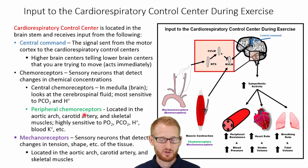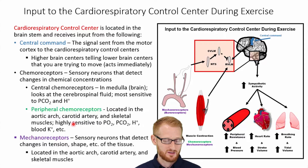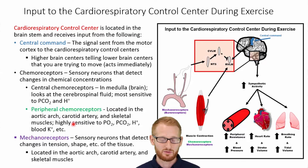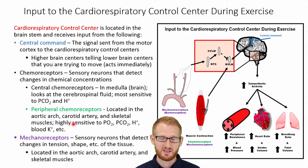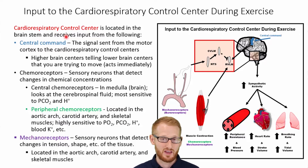We also have peripheral chemoreceptors, which are sensitive to the same things, but also to changes in potassium levels in the blood, because you release potassium from muscles whenever they contract. There are a number of other things that sensitize the peripheral chemoreceptors, all related to muscle contraction. All of these are going to send a signal back to the cardiorespiratory control center, telling it to increase respiration and heart rate.